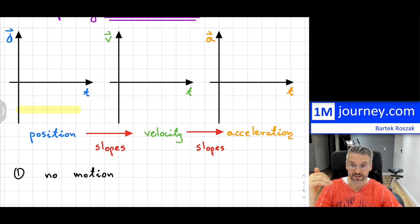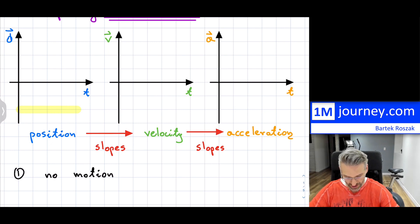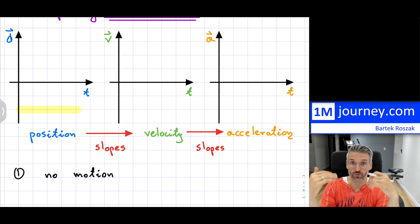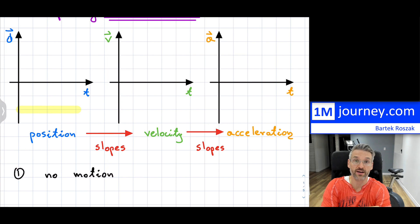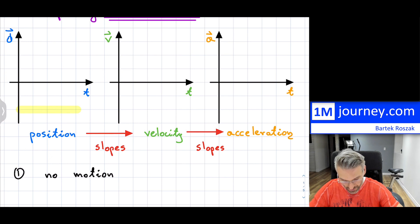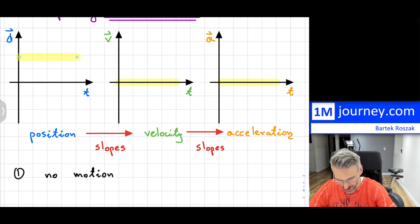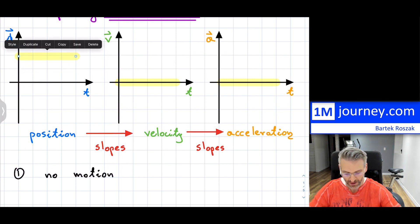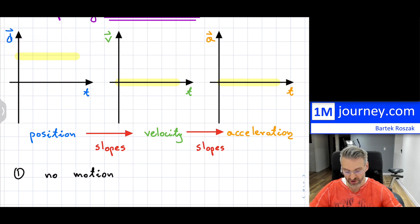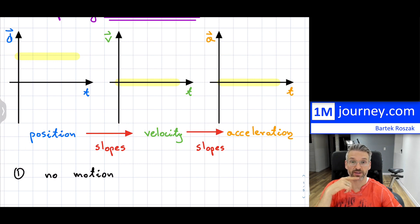In all of these no-motion cases, what does that mean for our velocity and acceleration time graphs? Intuition tells you: if you're not moving, you're not going to have a velocity, and you certainly will not have an acceleration — which is some kind of speeding up or slowing down in one dimension. So your graph would automatically just be a flat line for both — velocity and acceleration of zero. That's case number one, the simplest case.